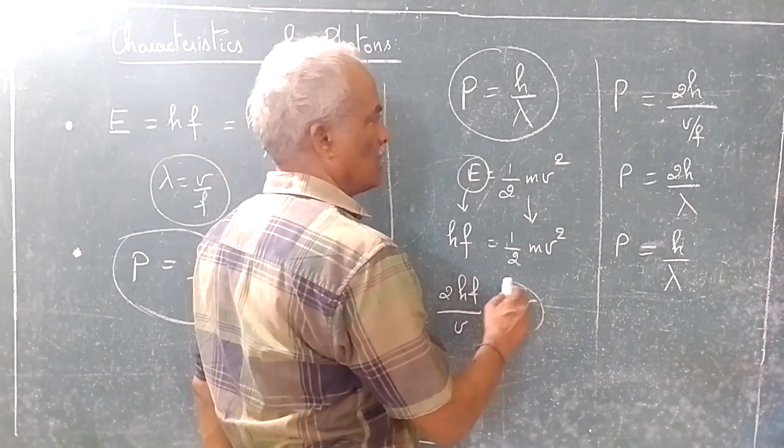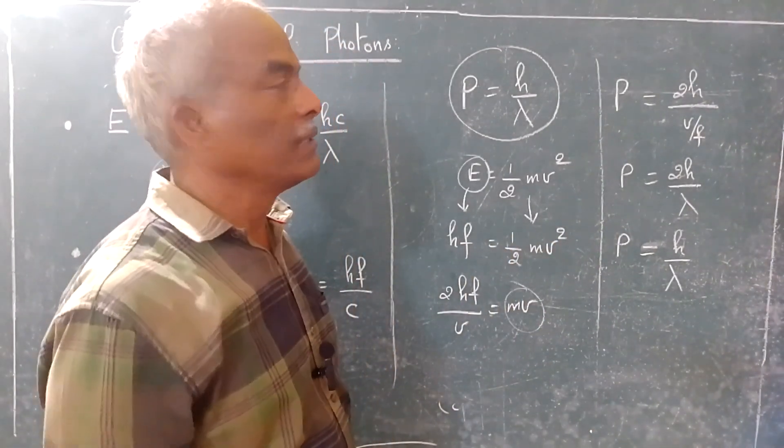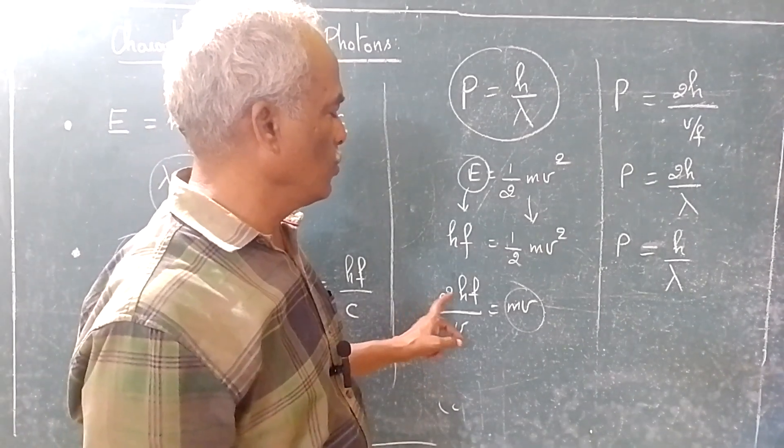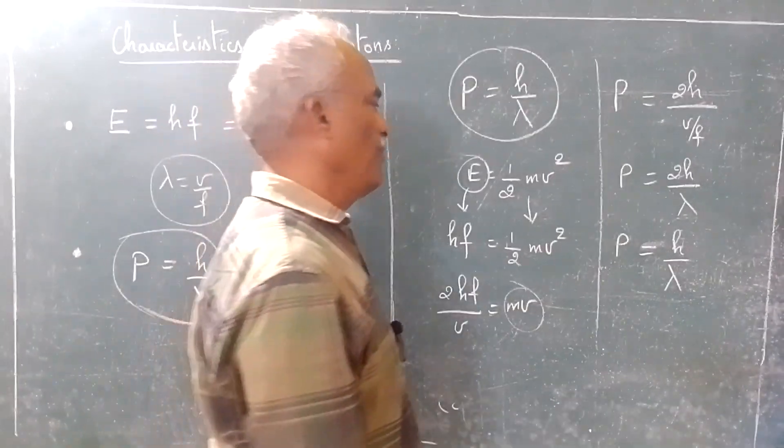Mass times velocity is what? P, momentum, which is given by 2hf by v.